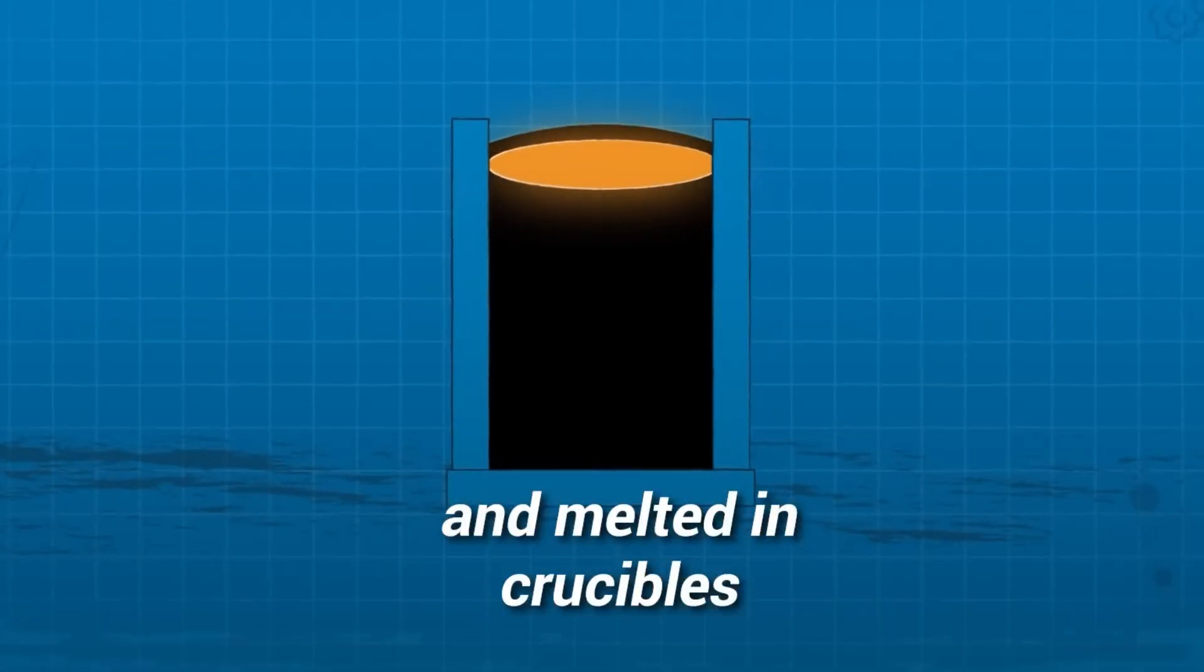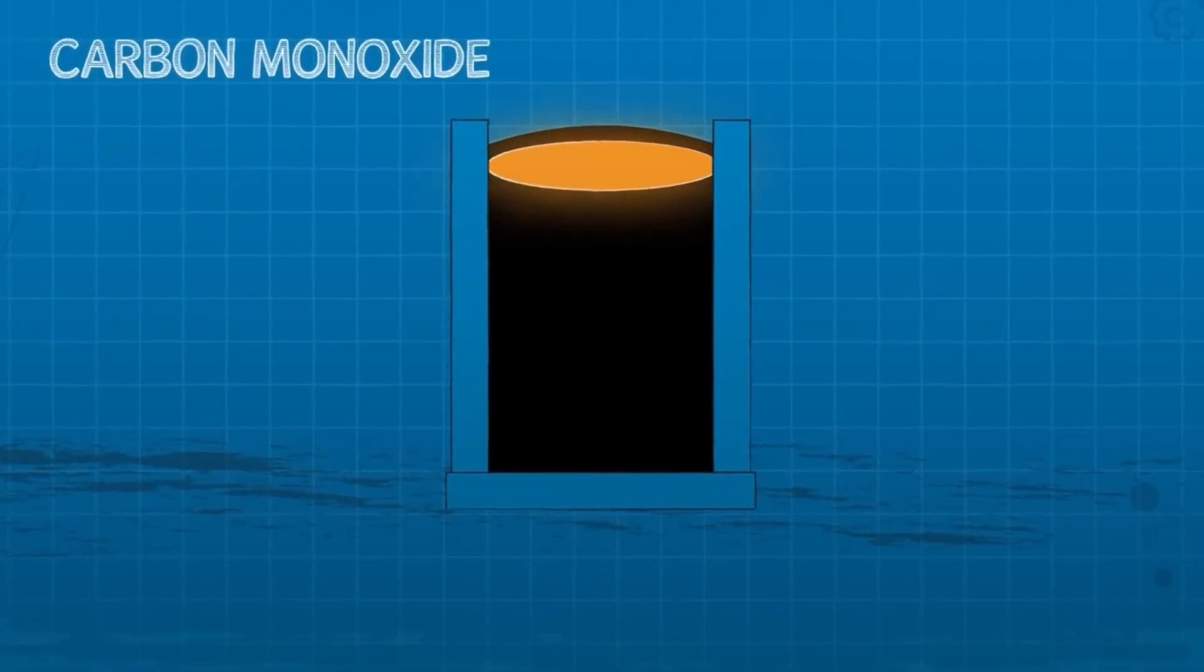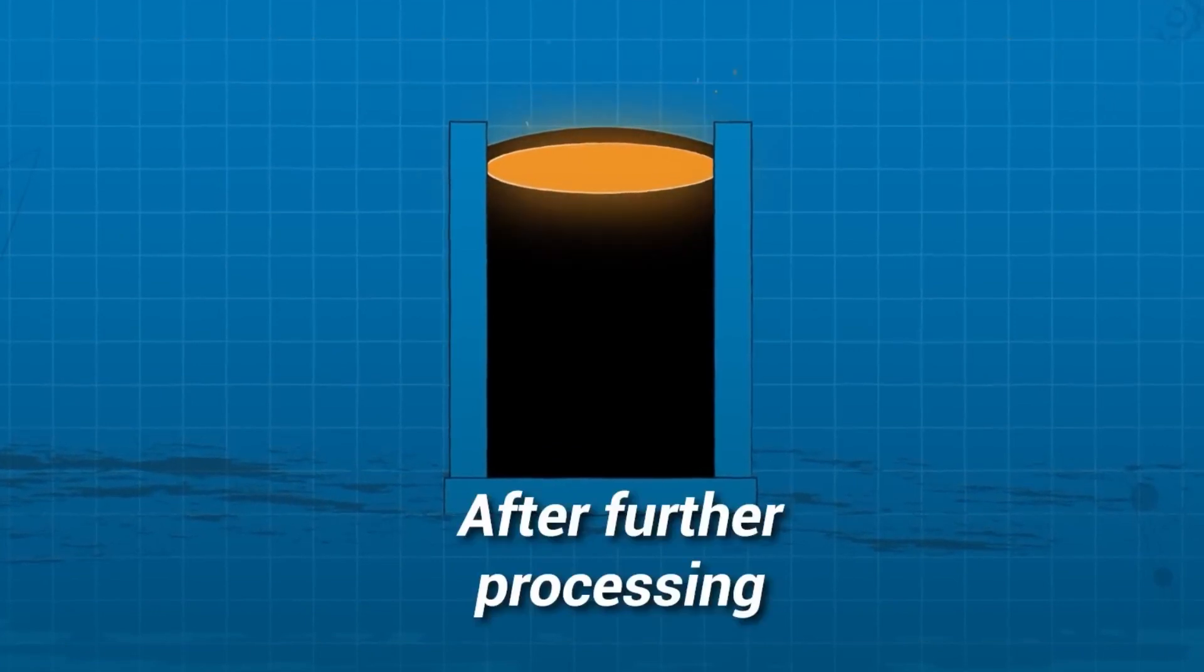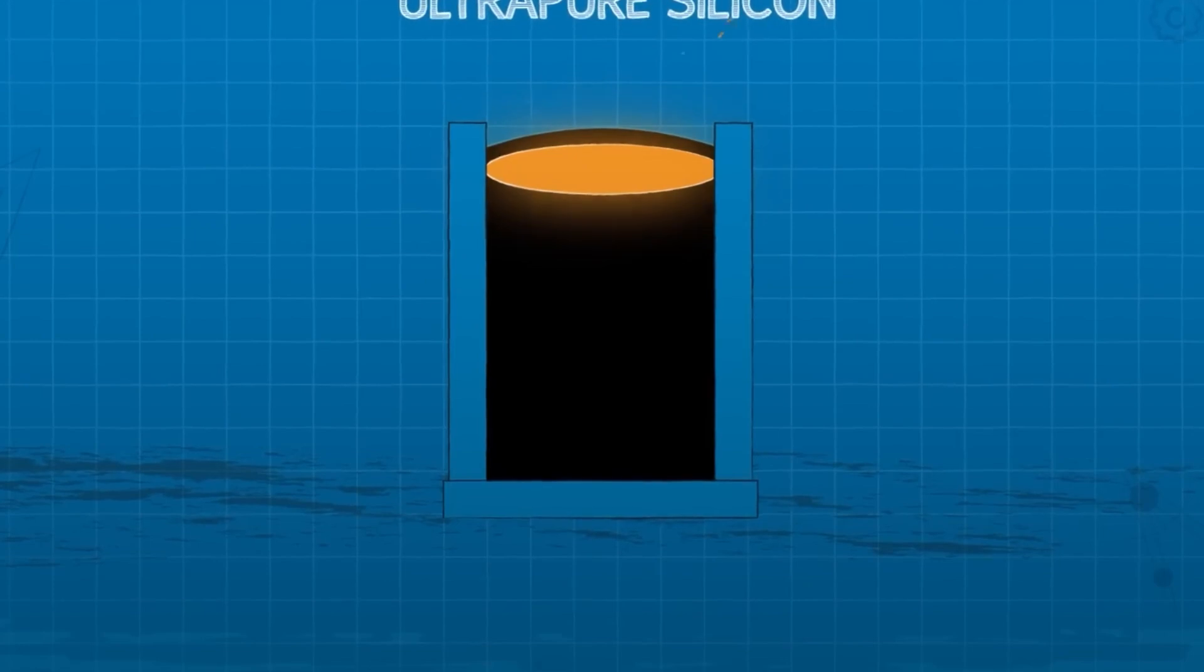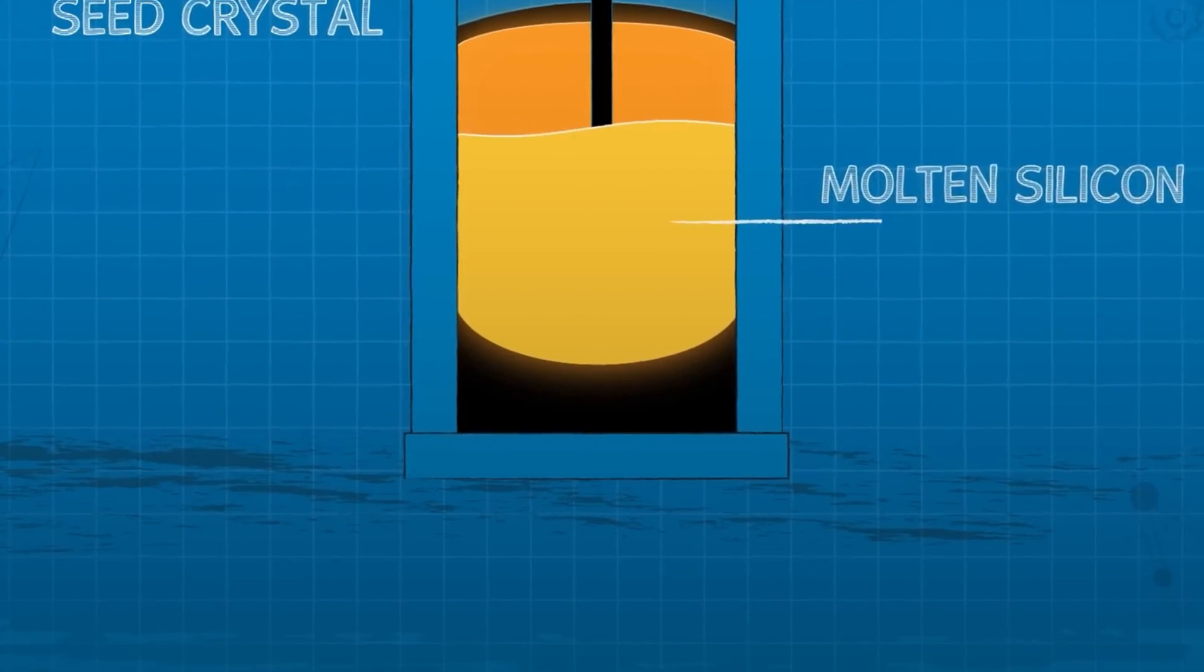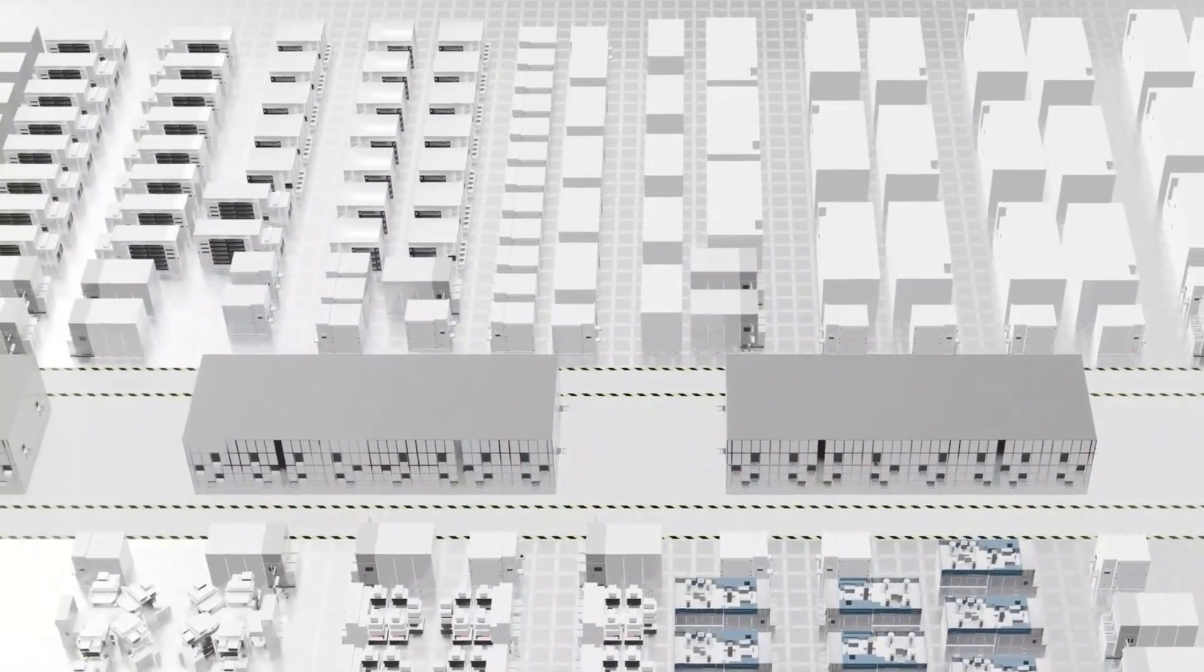However, once cut, microscopic marks are left on the surface, so they must be polished through a process called lapping. But even after going through this modern polisher, the sheets are not smooth enough, so they have to be polished again through a chemical process. The result is silicon wafers with a surface roughness of less than 0.1 nanometer.